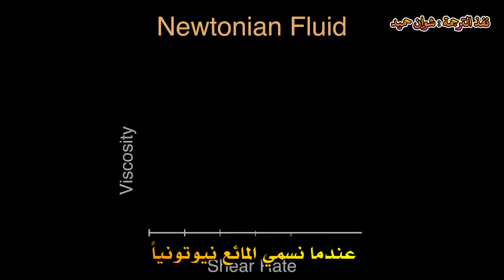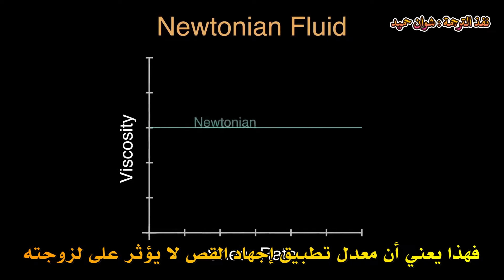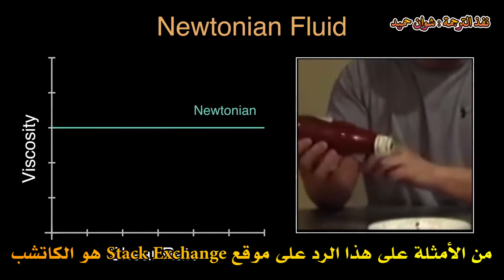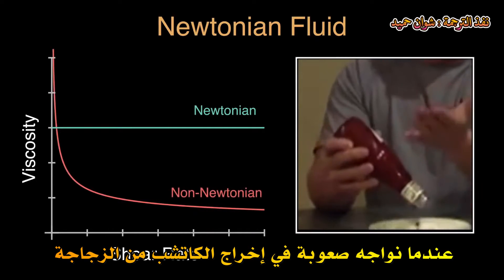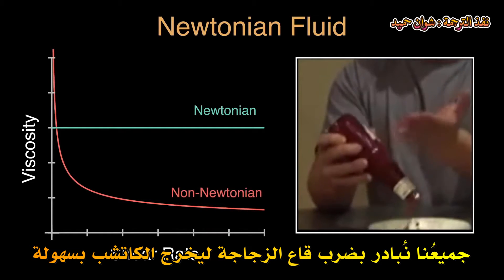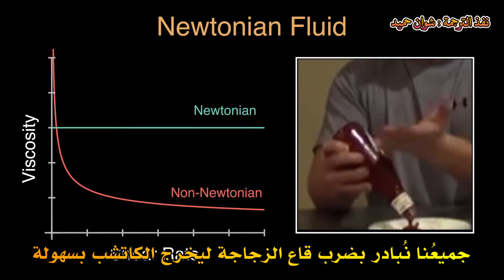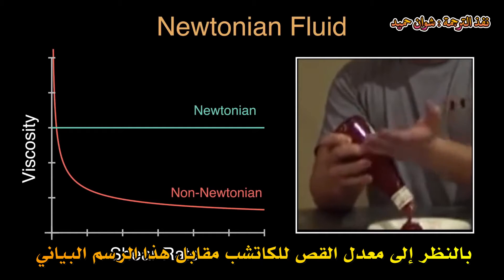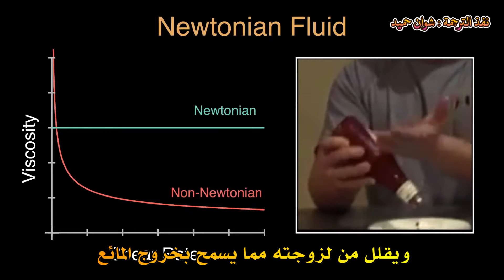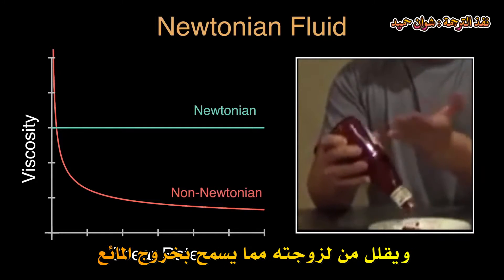When we call a fluid Newtonian, it means that the rate at which we apply some shear stress has no effect on its viscosity. An example from Stack Exchange is ketchup. When we have difficulty removing ketchup from a bottle, something we all do is hit the bottom of the bottle, and the ketchup comes out with ease. Looking at ketchup's shear rate vs viscosity graph, we can see that hitting the bottle, which increases the shear rate, decreases its viscosity, which lets the fluid out.